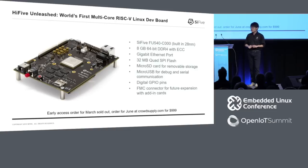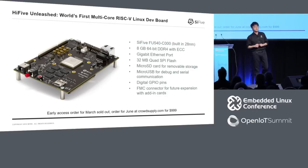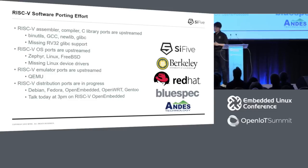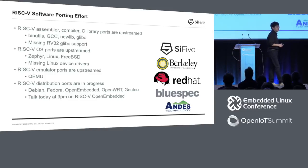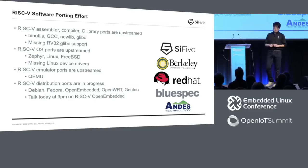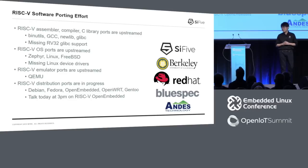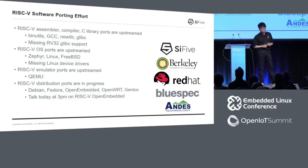It also has an FMC connector for future expansion — if you want to connect PCIe or USB, there will be an expansion I/O board with a Southbridge on it. The early access units for March have all been sold out; if you want one for June, you can order the HiFive Unleashed board at crowdsupply.com for $999. We have a bunch of software working on these platforms thanks to your support. RISC-V support for binutils, GCC, newlib, and glibc has all been upstreamed. RISC-V support for operating systems such as Zephyr, Linux, and FreeBSD has all been upstreamed. RISC-V emulator ports for QEMU have been upstreamed. However, there are still some missing pieces — missing support for glibc 32-bit and some Linux drivers. The RISC-V distribution ports for Debian, Fedora, OpenEmbedded, OpenWrt, and Gentoo are all in progress.